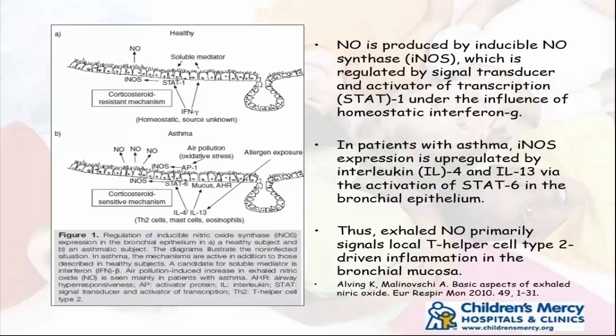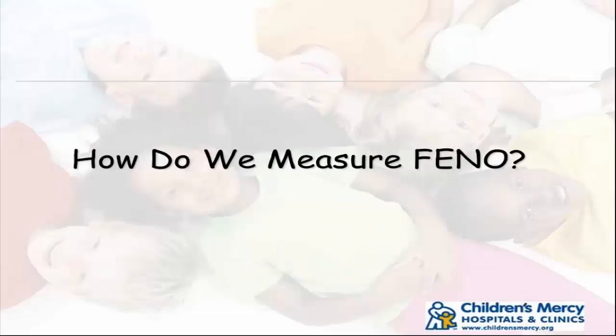The only problem in asthma is we're not quite sure if NO is a good guy or a bad guy — there was much debate about whether it's pro-inflammatory or anti-inflammatory — but the bottom line is it's a marker of inflammation and that's how we use it clinically. NO is produced by inducible nitric oxide synthase acting on arginine, which produces citrulline, regulated by two mechanisms: one via STAT1 under the influence of interferon gamma — which is why URI can raise it — and in asthma patients, iNOS expression is upregulated by IL-4 and IL-13 through STAT6 in the bronchial epithelium, which is the TH2-driven inflammation we care about.